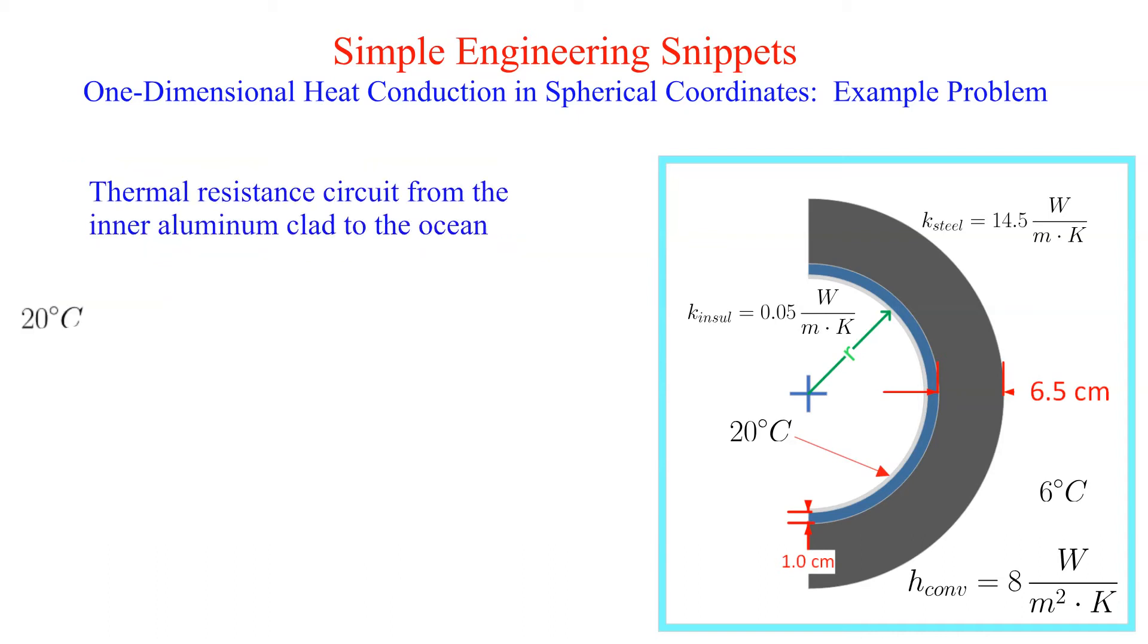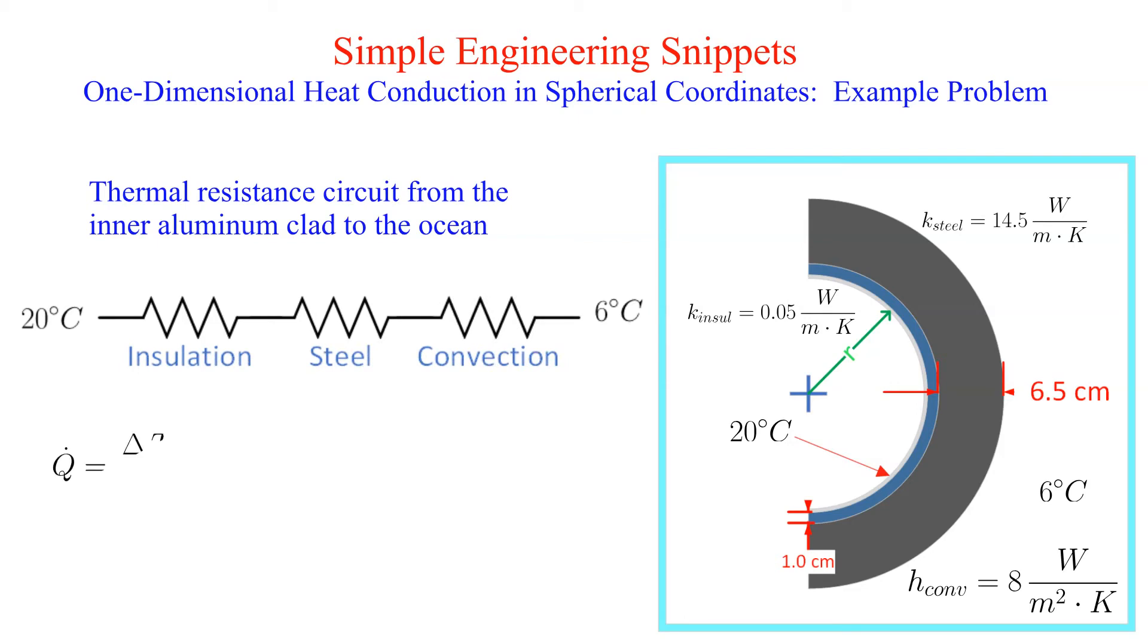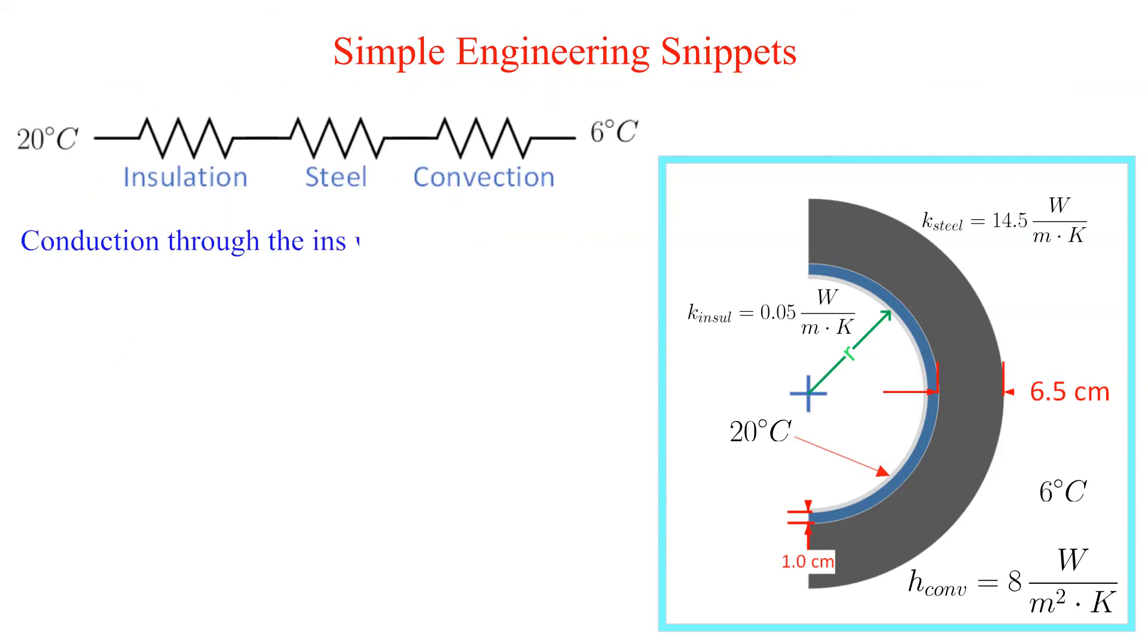Now we set up the thermal circuit. This is the thermal heat conduction equivalent of the well-known Ohm's law from electrical circuits. Instead of a difference in voltage, the driving potential is the difference in temperature. We still need to calculate the value for each thermal resistor in the circuit.